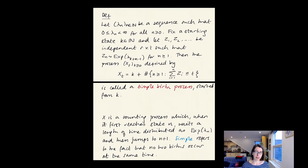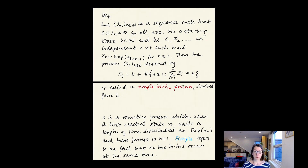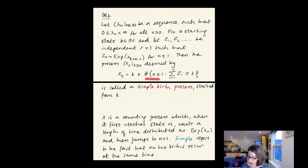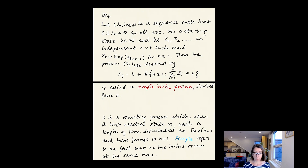Let's fix a sequence of parameters lambda_n for n in the naturals — a sequence such that every element is finite and greater than or equal to zero for each n ≥ 0. We fix a starting state k in the naturals, and let z_1, z_2, … be independent random variables, exponentially distributed with z_n having parameter lambda_{k+n-1} for all n ≥ 1. We define the process x_t by starting in state k and adding the number of values n such that the sum of those exponential random variables is less than or equal to t. A process constructed in this way is called a simple birth process started from state k.